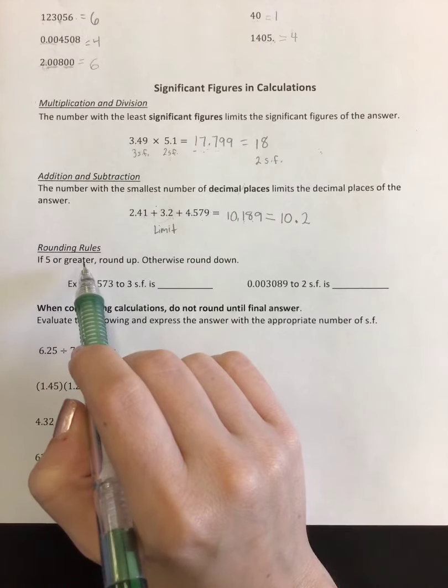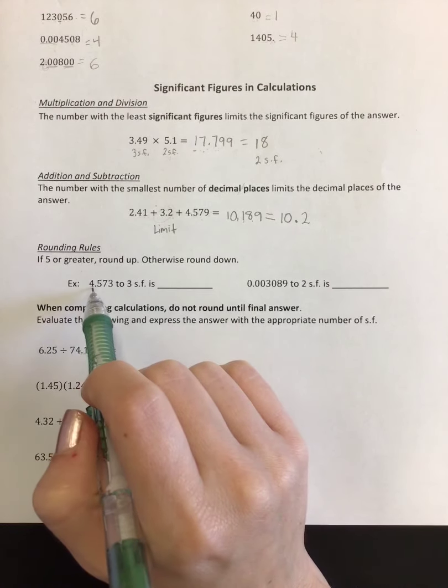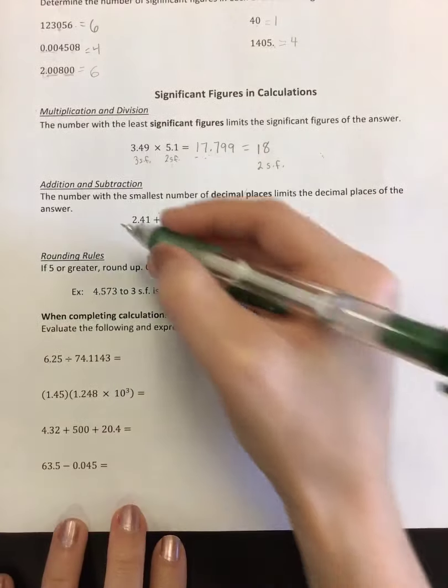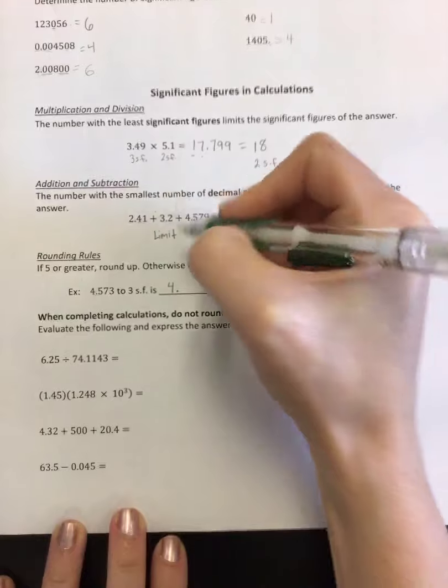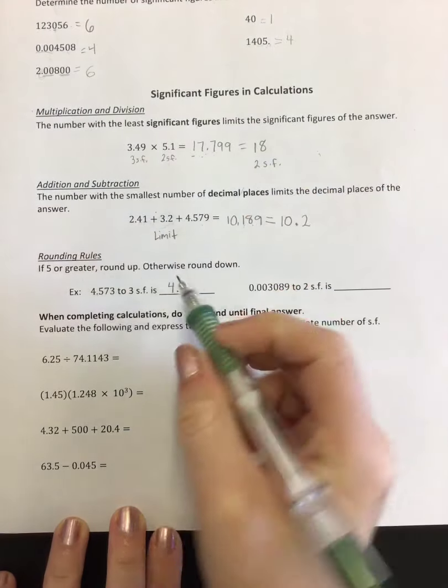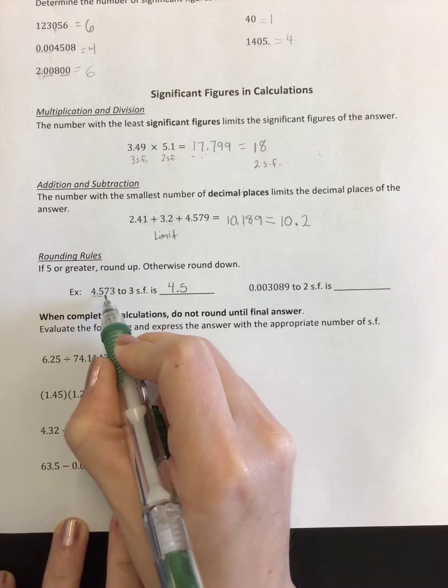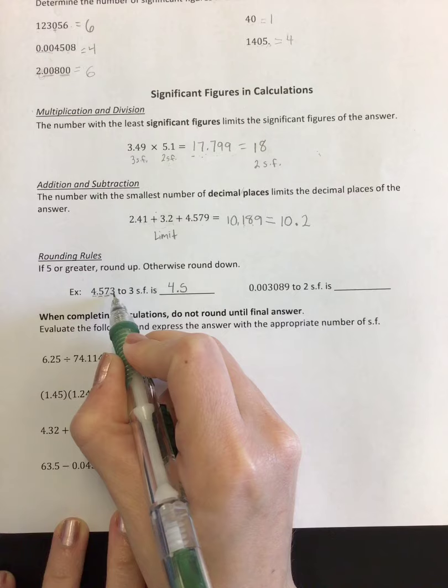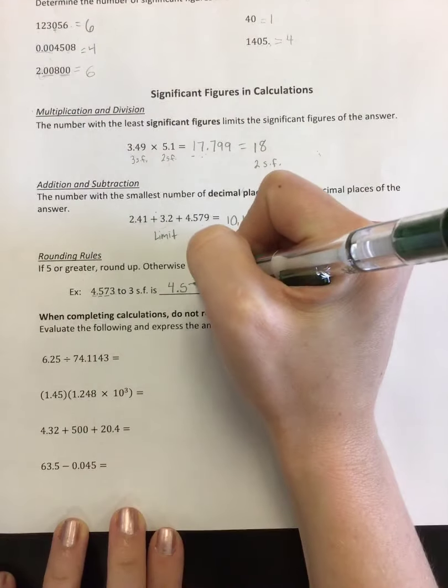And this is just a reminder on rounding rules. Like I said, if it's five or greater, round up. Otherwise, round down. So if you wanted to take this one to three sig figs, like I said, start from the left and go to the right. I know that I'm going to have a four and a point and a five. My last digit is going to be my last sig fig I'm allowed. So four, five, I'm looking at this seven. Next to it is a three. So am I going to round up to eight or keep it as a seven? I'm going to leave it as a seven.